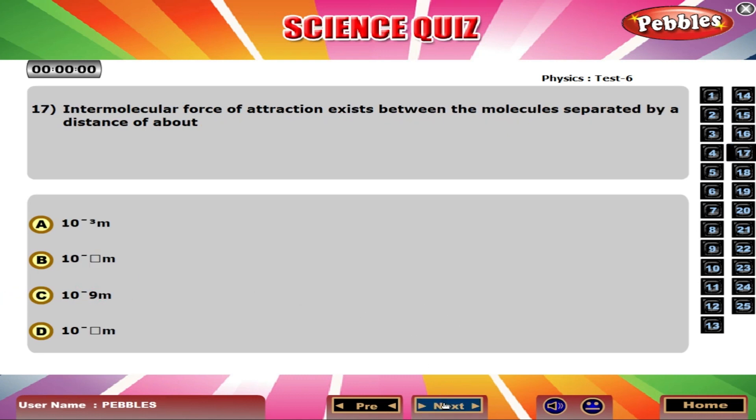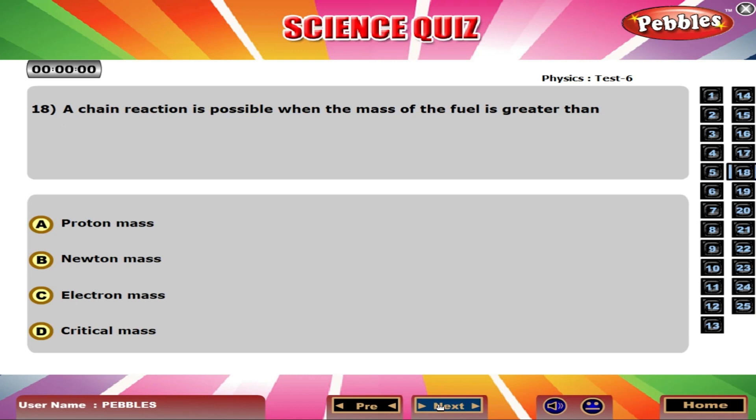Intermolecular force of attraction exists between the molecules separated by a distance of about 10 to the power minus 9 m. A chain reaction is possible when the mass of the fuel is greater than critical mass.